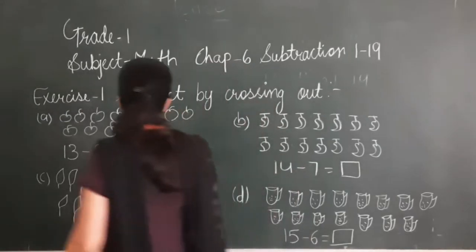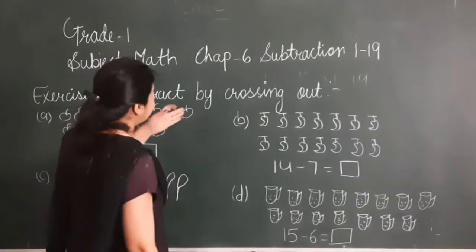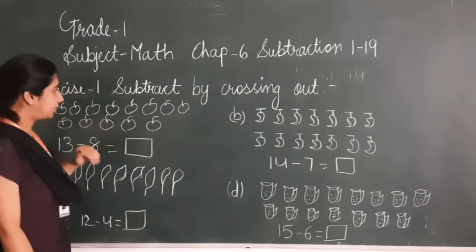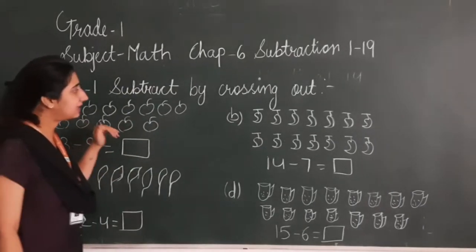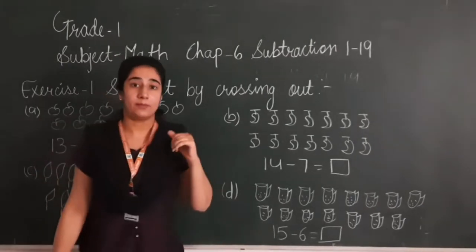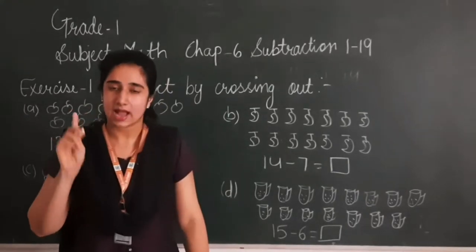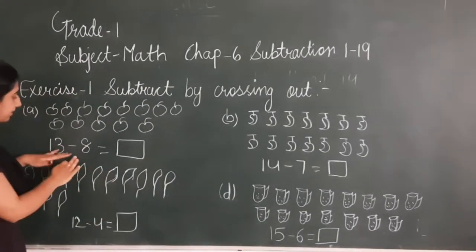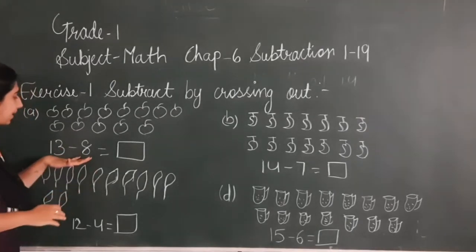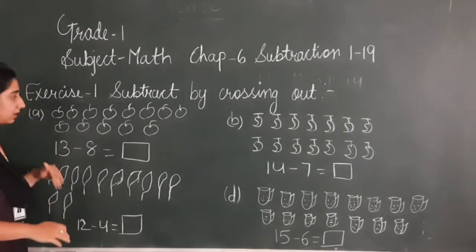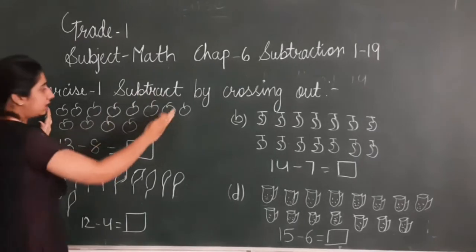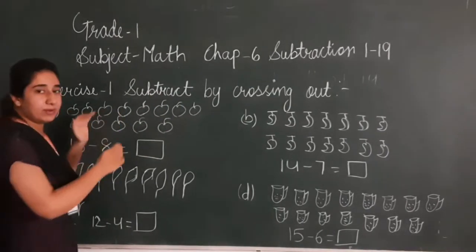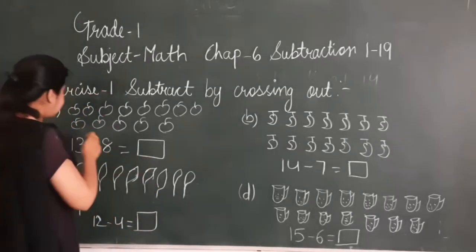Exercise 1. Subtract by crossing out. Here I have drawn some objects. We have to subtract these objects by crossing them out. Here, 13 minus 8. We have to subtract 8 from 13. Here I have drawn 13 apples. We have to subtract 8 apples from these. Let's start.